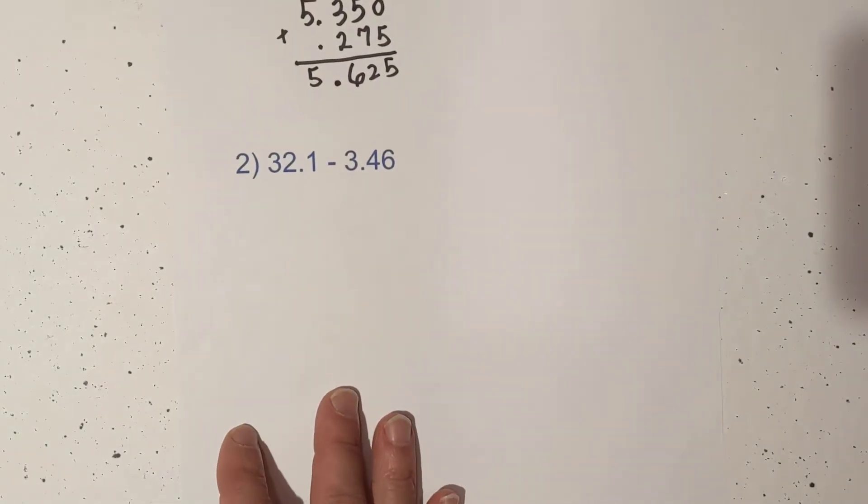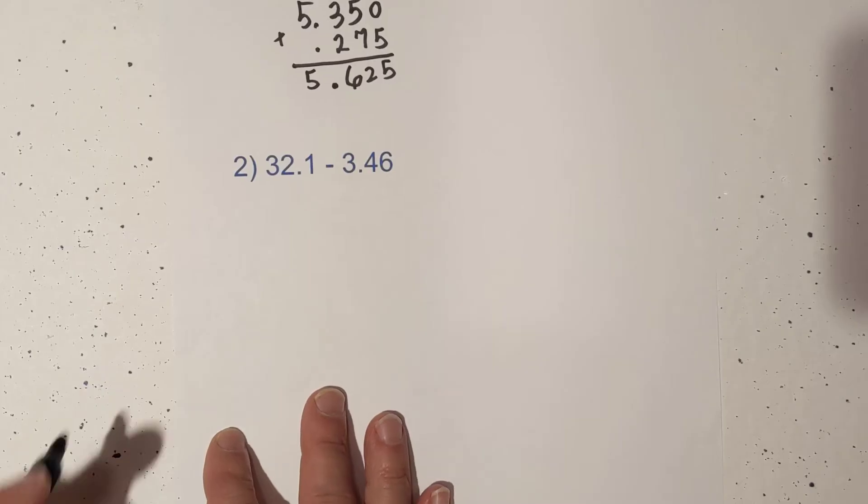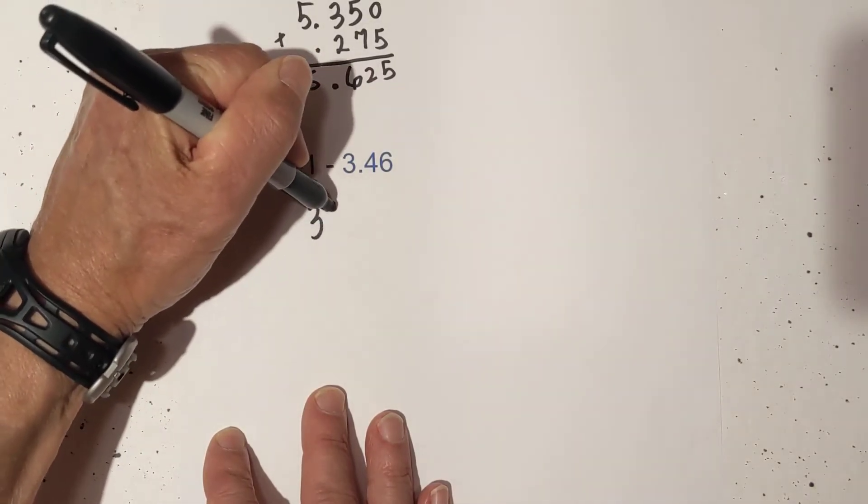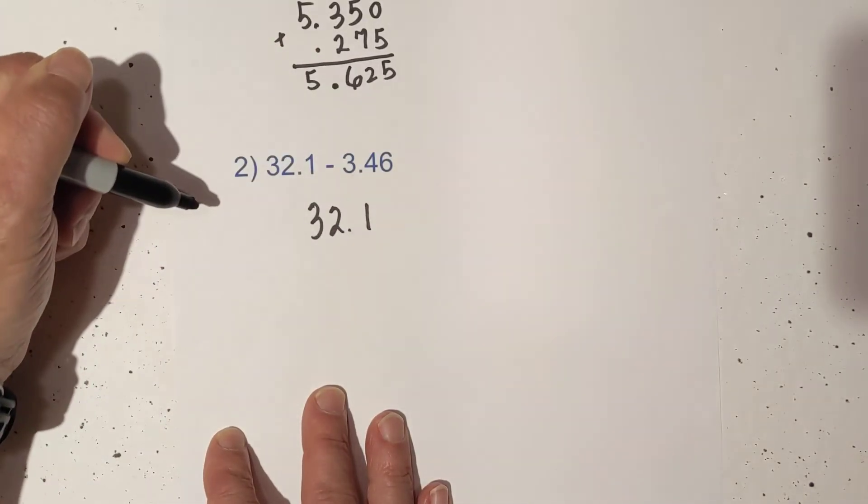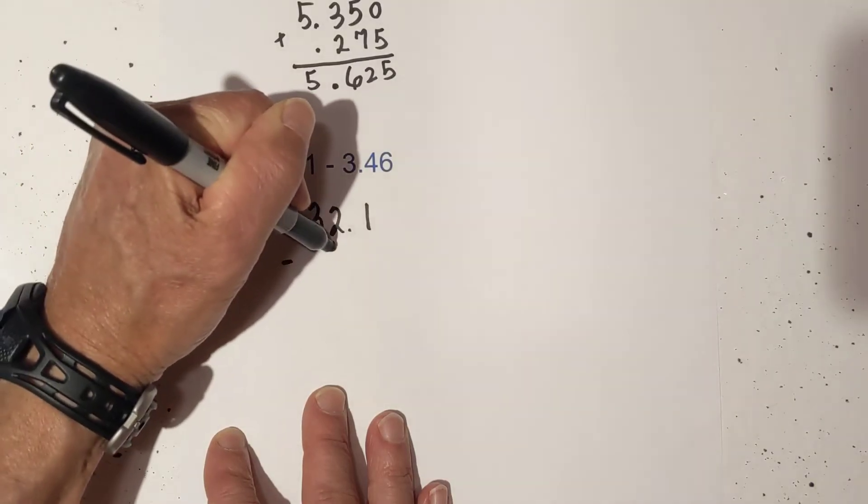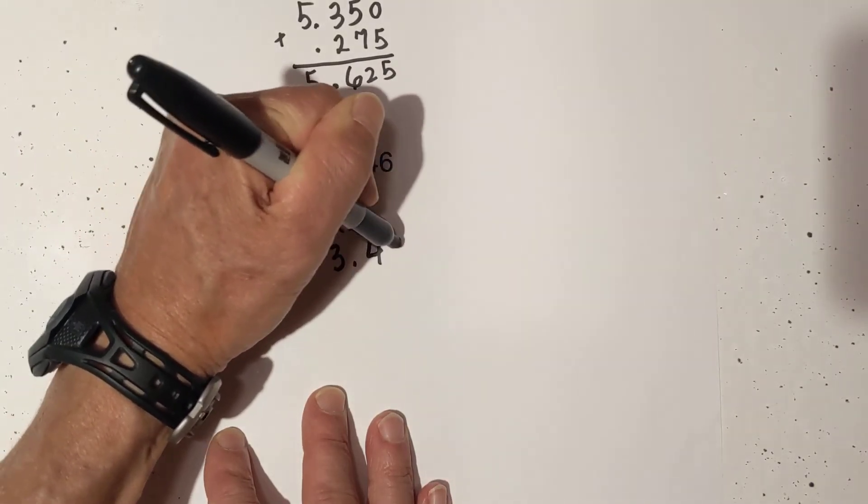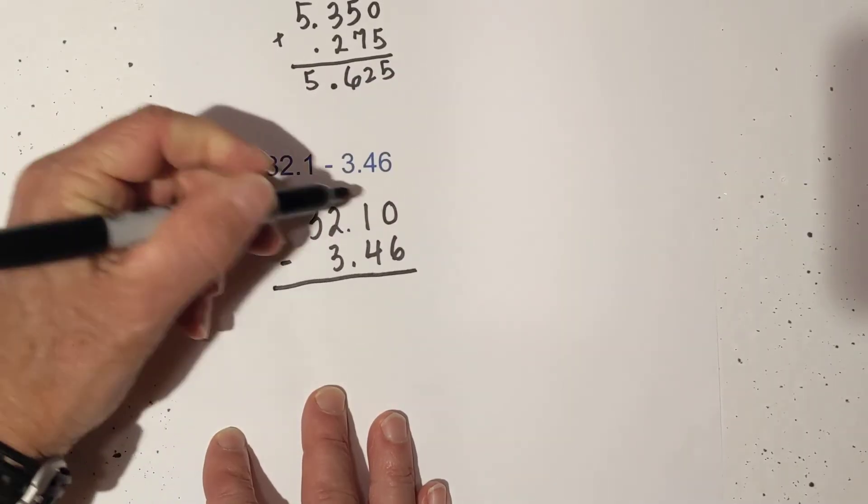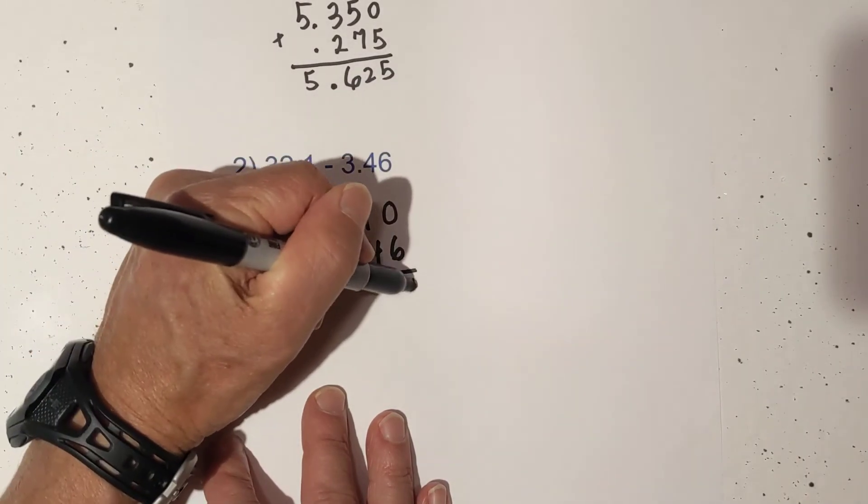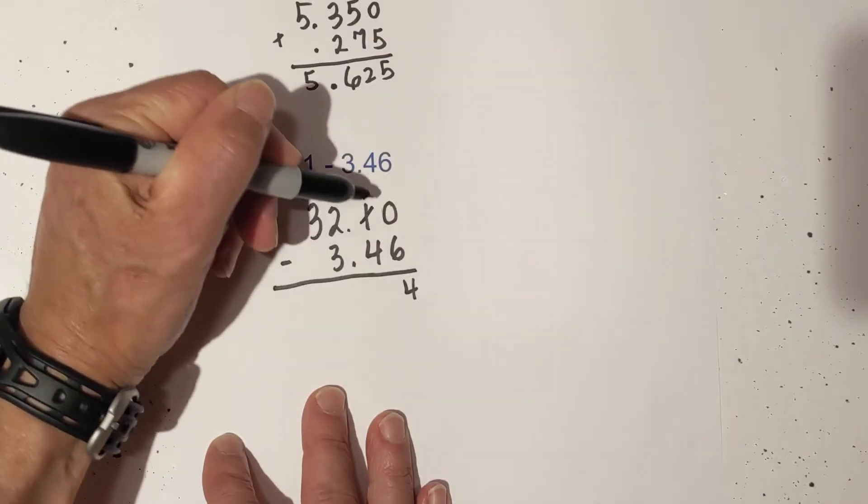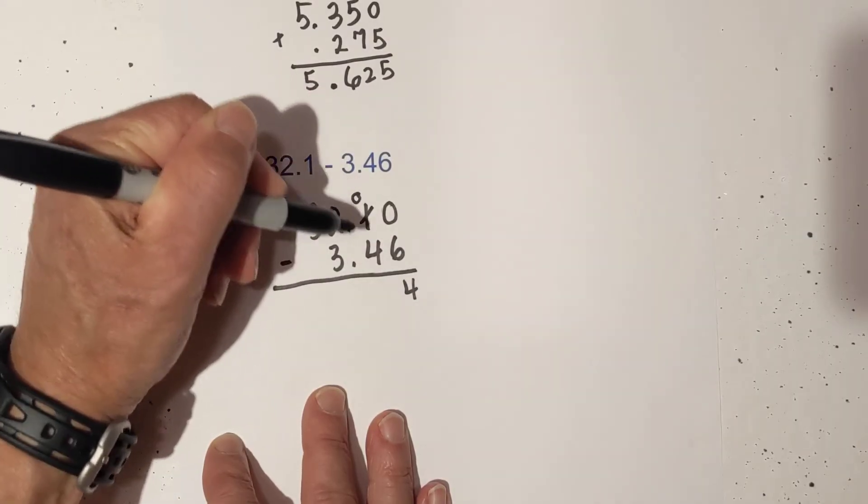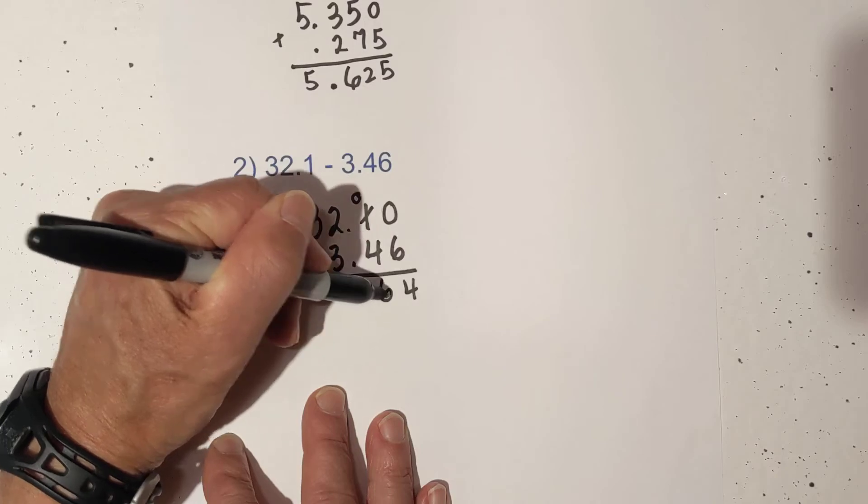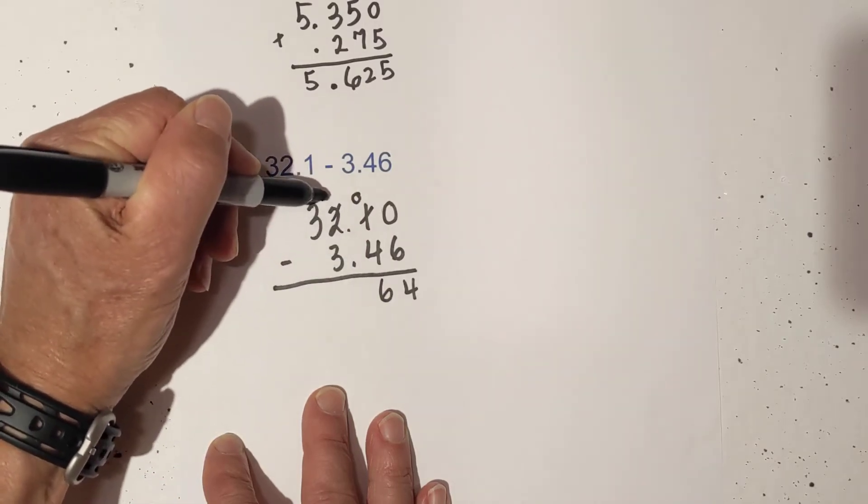Now let's try some subtraction. We have 32.1 minus 3.46. Let's put in a 0. Now all we do is subtract. This will be a 4. I'm going to borrow 10 from here, so this will be a 0. This will be a 6. I had to borrow 10 from here,